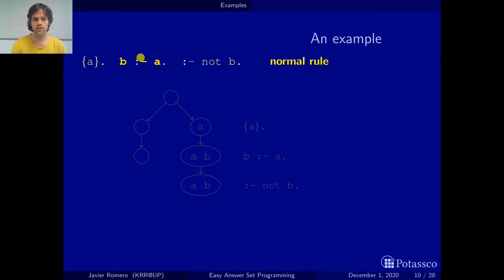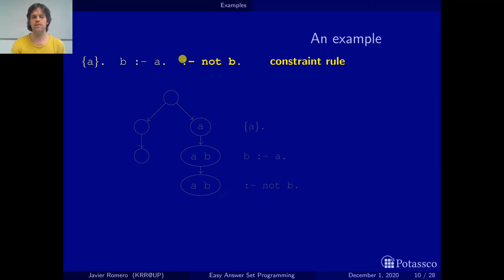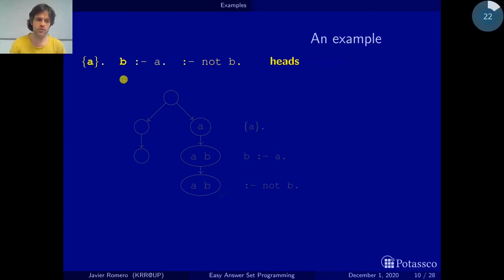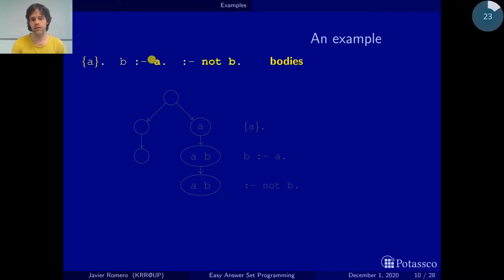You can read the ':-' symbol as 'if' in natural language. The third rule is a constraint rule because it constrains the answer sets we may have. It can be read as: it cannot be the case that b is not in an answer set, or equivalently, delete an answer set if b is not in it. The key difference is that there is nothing to the left of it — what is to the left of a rule is called the head, and what is to the right is called the body. Constraint rules do not have a head.